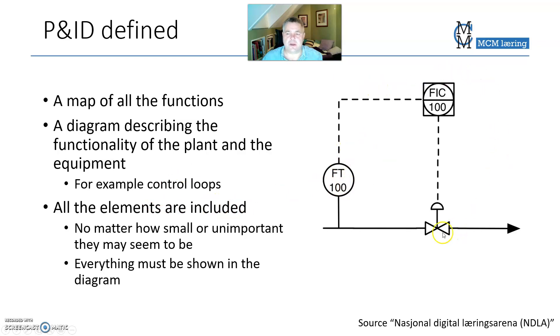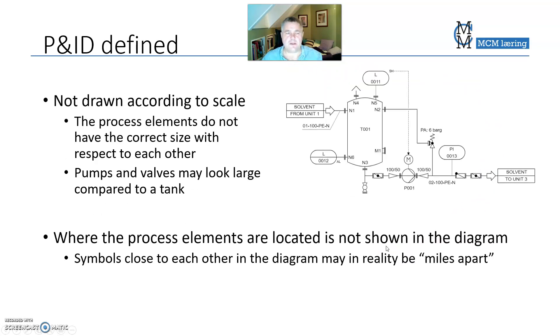It could be a map of part of a plant or the entire plant itself. The P&ID is not drawn according to scale. Like in this diagram here, you could guess that the tank would be much larger than, for example, a sensor or an indicator. The indicator is drawn much larger than it really is, but the point is to give the reader an overview of the entire plant.